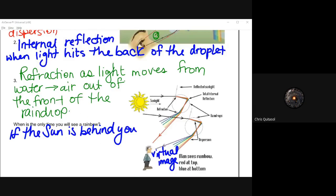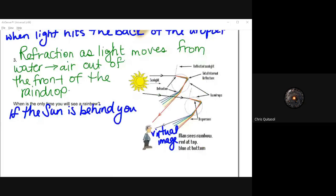The only time you're ever going to see a rainbow is if the sun is behind you, due to the nature of how total internal reflection needs to work, as well as that refraction.